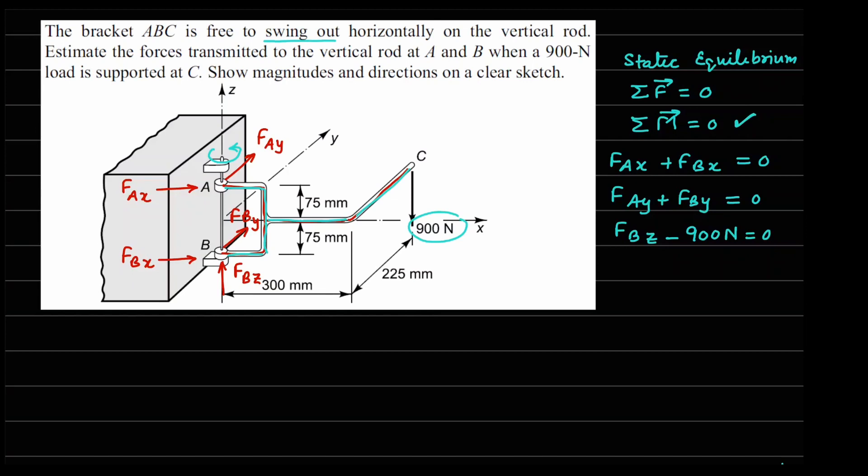Now for such problems, which are in 3 dimensions, for moment calculation, I always prefer that you use the vector form of this formula, which is moment at a point is given by R cross F, where R is the location of force and F is the vector representation of the force. So in this case, we need a point about which we are going to do the moment balance.